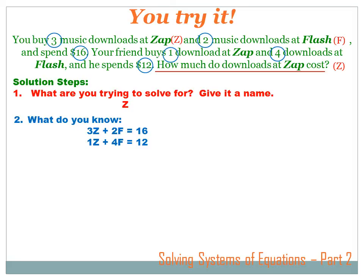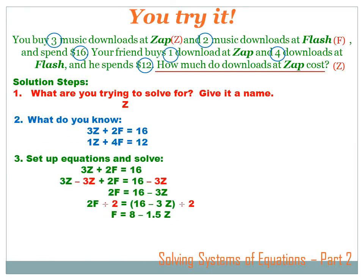We've got two equations and can probably solve for Z. We could solve each equation for one variable and set those two solutions equal to each other. Or we can solve one expression for either variable and substitute that solution into the other expression and solve. Let's take the first expression and solve it for F. If I know what F equals, then I can substitute that solution for F in the second expression and then solve for Z.